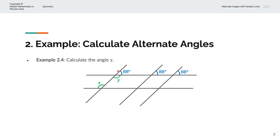To solve for Y, we apply the 180-degree angle on a straight line: 180 degrees minus 88 degrees, which simplifies to Y equals 92 degrees. And because X and Y are alternate angles, they must be identical, so X equals Y equals 92 degrees.